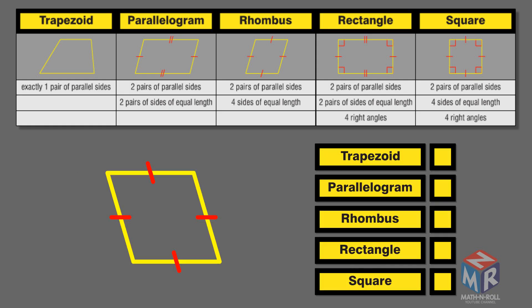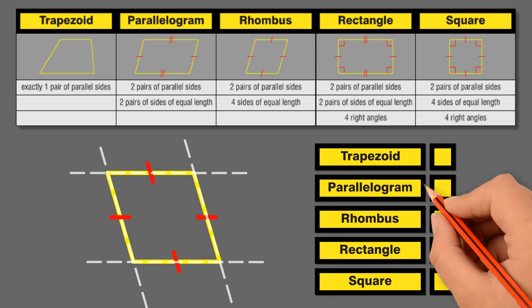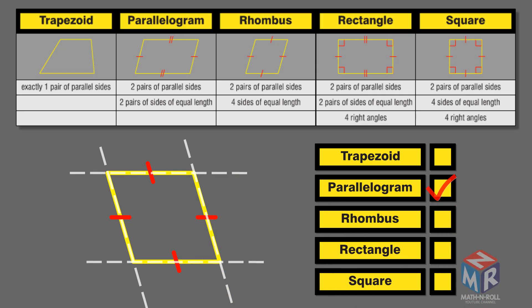Let's take a look at another quadrilateral. It is not a trapezoid because it has two pairs of parallel sides. It is a parallelogram because it has two pairs of parallel sides and two pairs of sides that are equal in length. It is also a rhombus because it has two pairs of parallel sides and four sides that are equal in length. It is not a rectangle or square because it does not have four right angles.